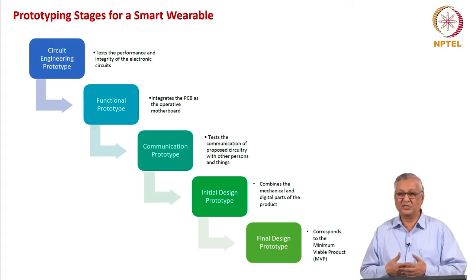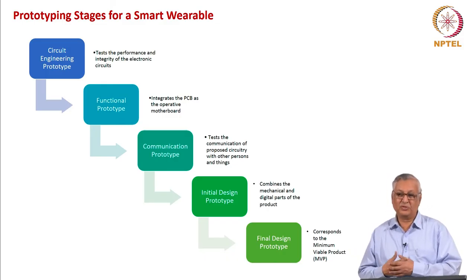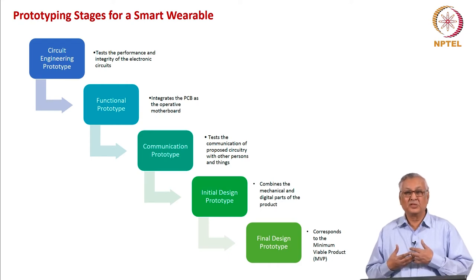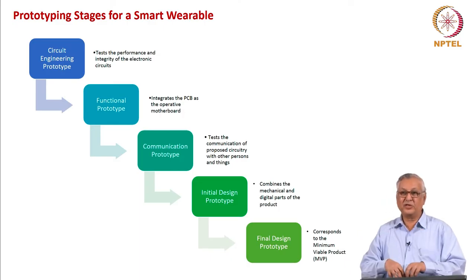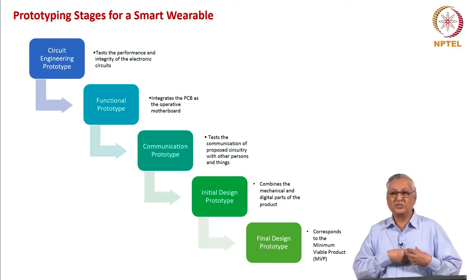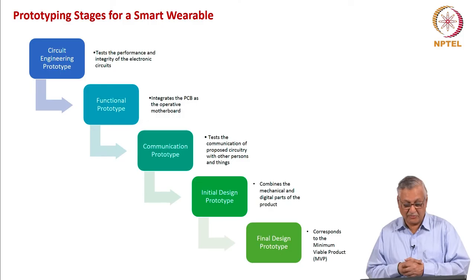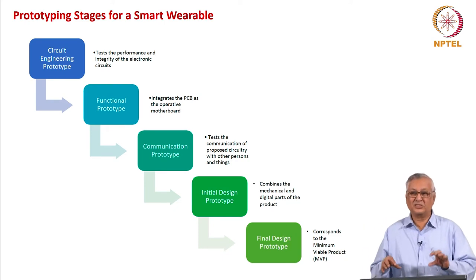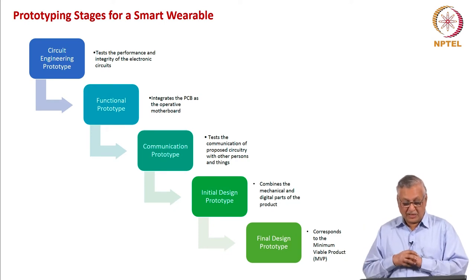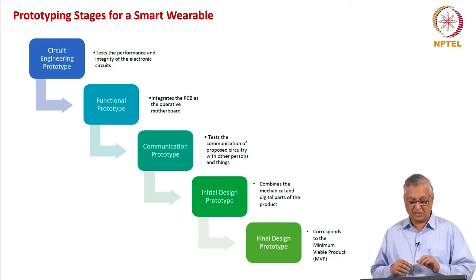Once you understand that the circuitry is working well, you try to make a PCB — the motherboard — out of this electronic circuit, which holds your entire intellectual property and execution. That is the functional prototype. Then comes the next phase: the communication prototype, which is the one that will actually communicate with the body, the external environment, or other devices. The circuit itself may work well, but when you put a case over it or make it operate through a piece of clothing, it may not behave the same way — the Bluetooth efficacy and sensor efficacy may be quite different.